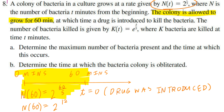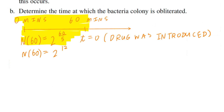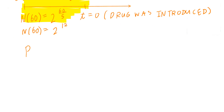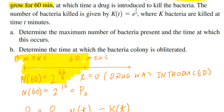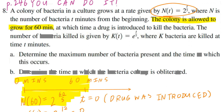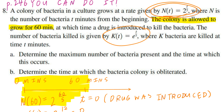When you think about the setup, what you're looking for is the population P. You need to know the initial population P₀, which equals 2 to the power of 12. It took 60 minutes to reach this initial population. Then you multiply by the growth rate N of t, which is 2 to the power of t divided by 5, minus k of t, which is e to the power of t divided by 3. The growth and kill happen in the same timeframe, and the only separator is the initial population.